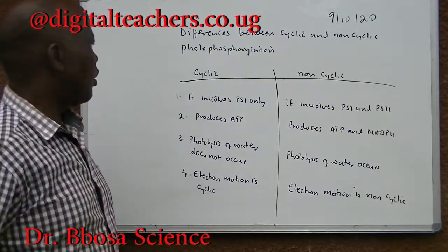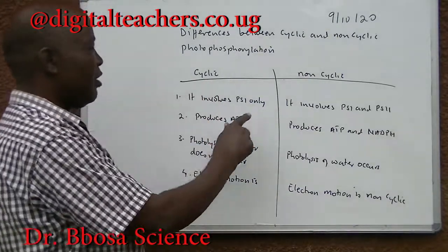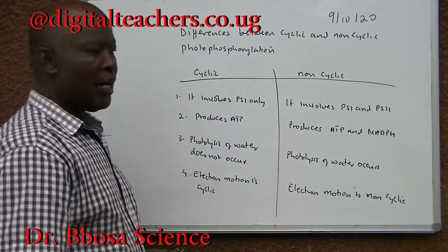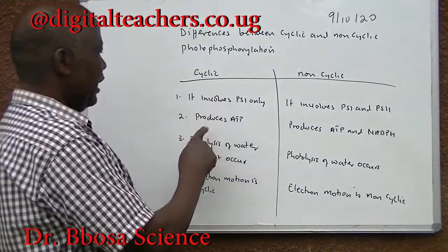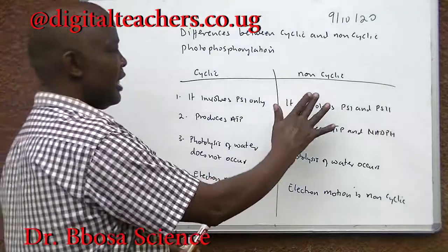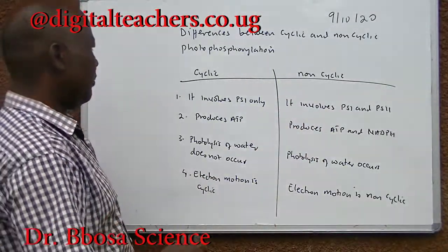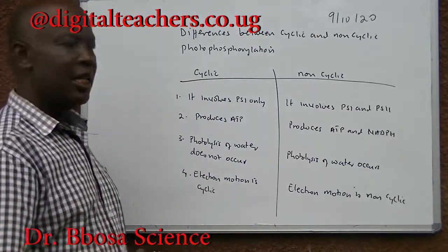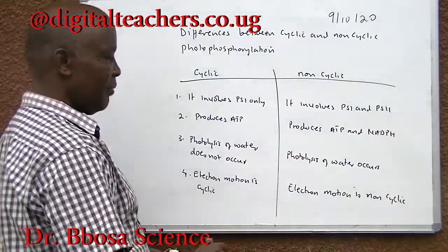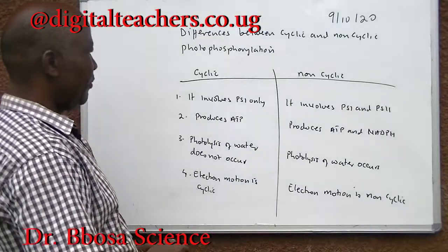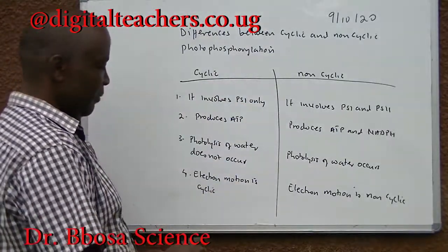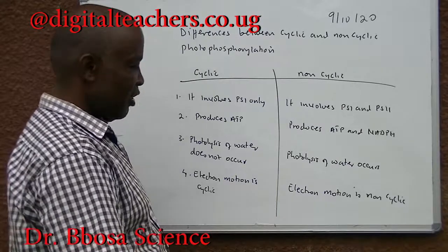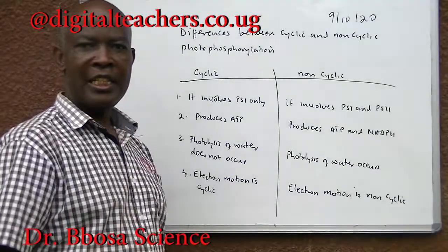Differences between cyclic and non-cyclic photophosphorylation: cyclic involves PS1 only; non-cyclic involves PS1 and PS2. Cyclic produces ATP only; non-cyclic produces ATP and NADPH. In cyclic photophosphorylation, photolysis of water does not occur; in non-cyclic photophosphorylation, photolysis of water occurs. In cyclic, electron motion is cyclic; in non-cyclic, electron motion is non-cyclic.